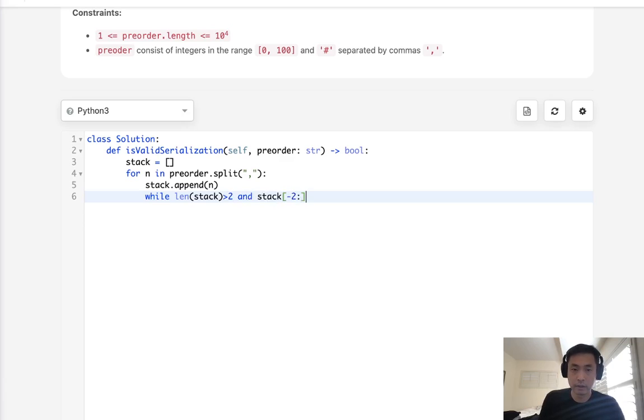if it equals what? Hash times two like this, that means that we should have found a leaf node. And we also need to make sure that stack[-3] here is not equal to a hash symbol.